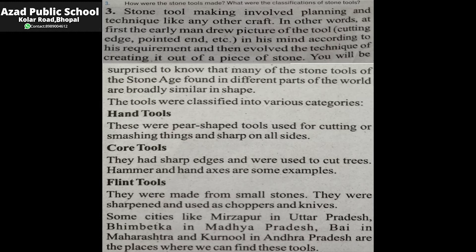The tools were classified into various categories. Hand tools, core tools, and flint tools. Hand tools were pear-shaped tools used for cutting or smashing things, sharp on the sides — chezon ko kaatne ke liye sharp tools yaani ki hand tools istamal hote the.